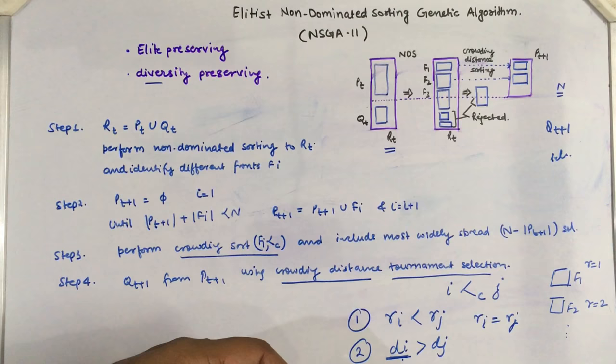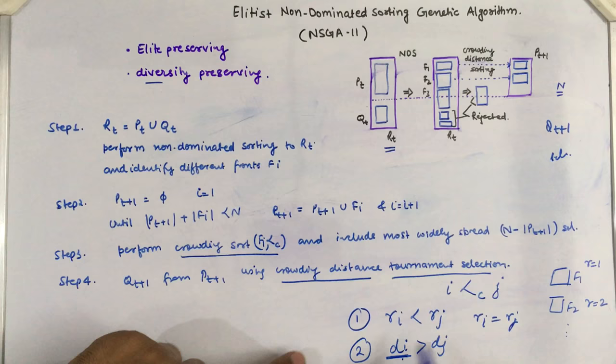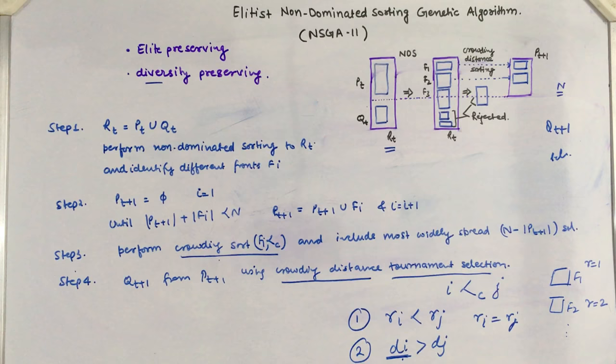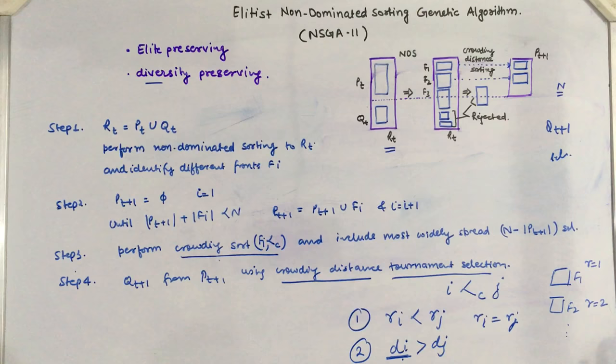Crowding distance is used both in the tournament selection operator in step four and in the crowding distance sort in step three, making it a very important step in NSGA-II. We will now look at how to calculate the crowding distance and how it identifies the most diverse solutions in the population.